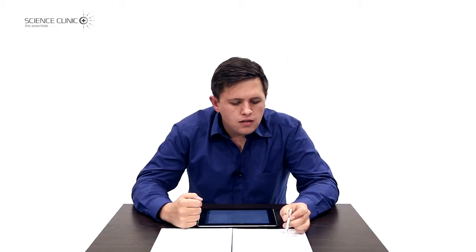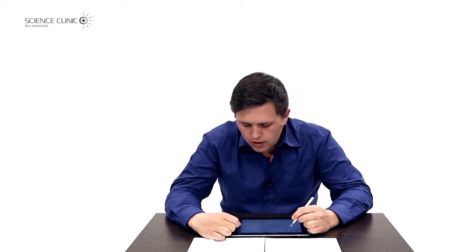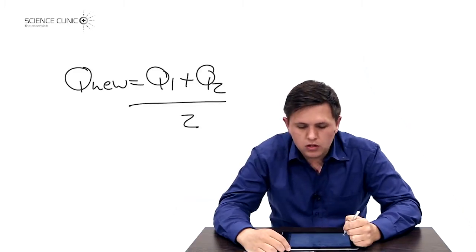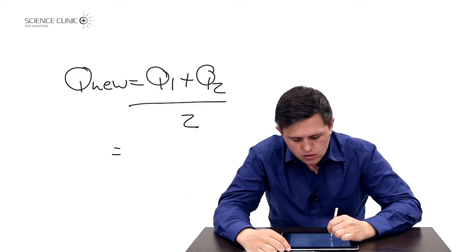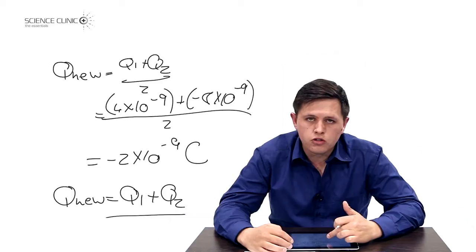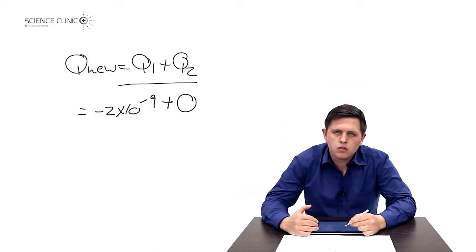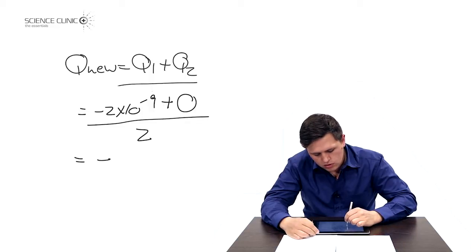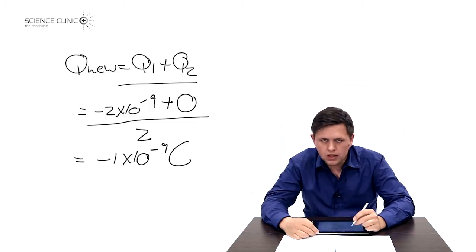The next question says sphere B comes into contact with a neutral sphere. So the contact is now between sphere B, which already has its new charge of negative 2×10⁻⁹ C, and a neutral sphere. You must use the values from your previous calculation. We apply Q_new = (Q1 + Q2) / 2, where Q1 is negative 2×10⁻⁹ coulombs.